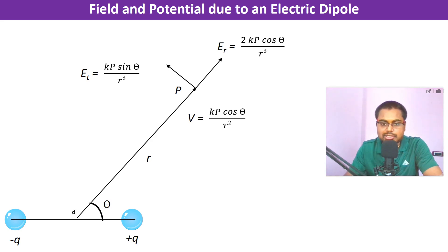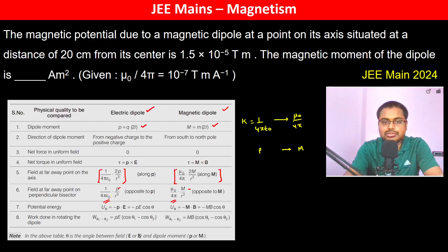Potential due to an electric dipole is kp cos θ by r². Therefore, potential due to magnetic dipole is μ₀ by 4π into m cos θ divided by r².